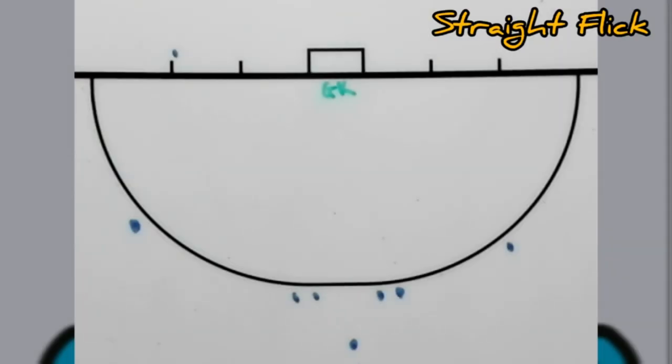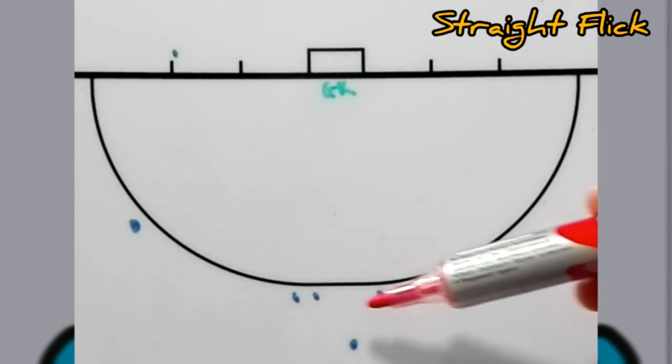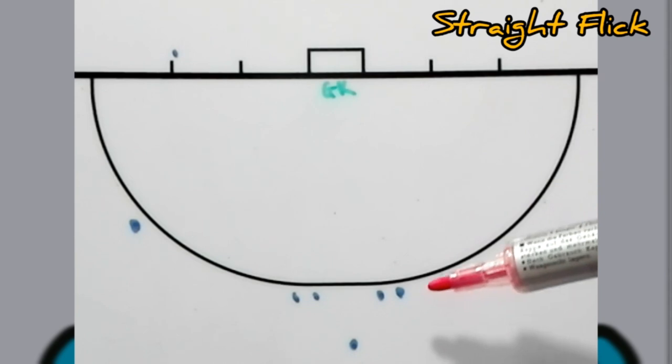So for the short corner variations part one, variation number one is just the normal straight flick, the straight drag flick. What you want to do as a coach is obviously set up with two castles, castle number one and castle number two.